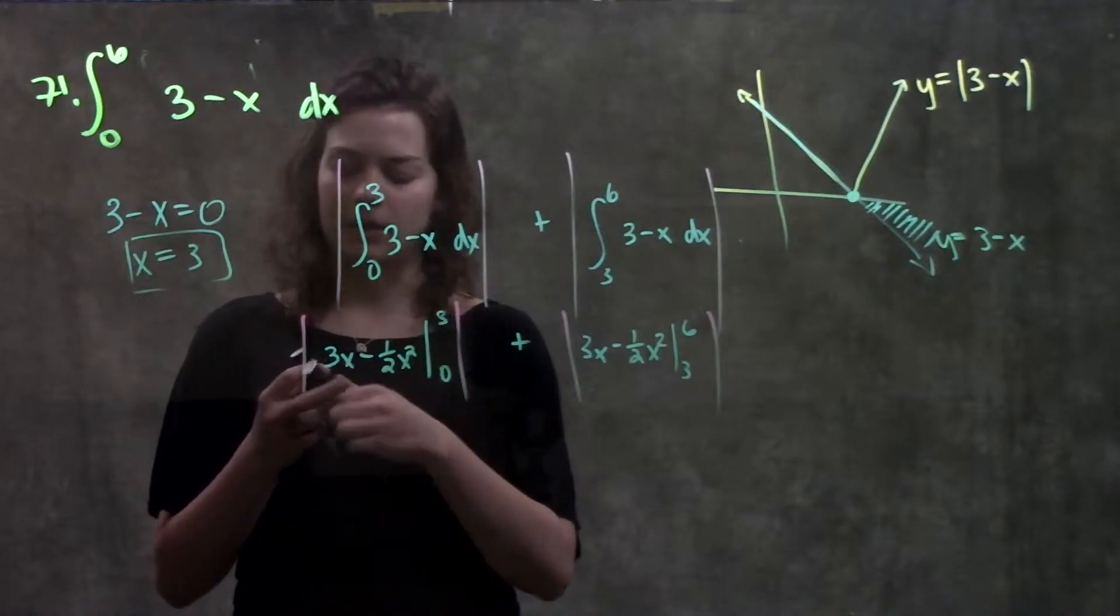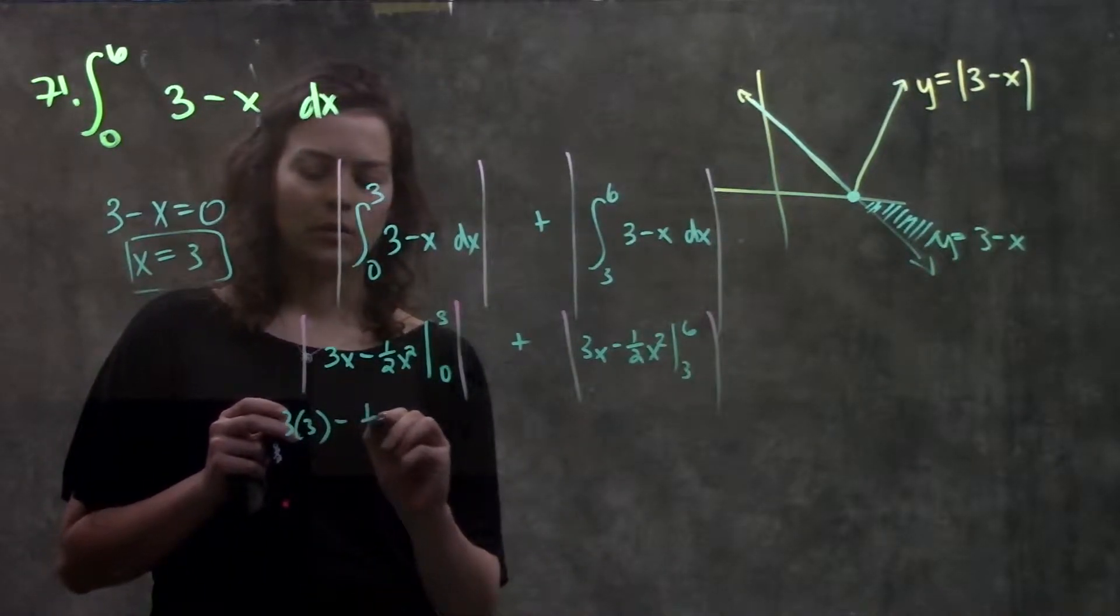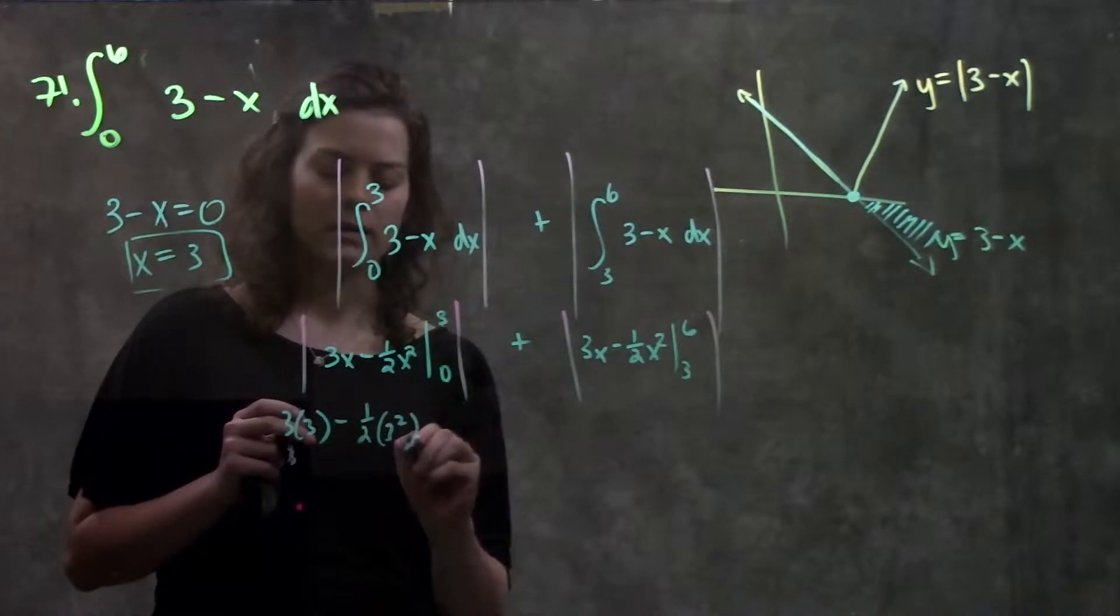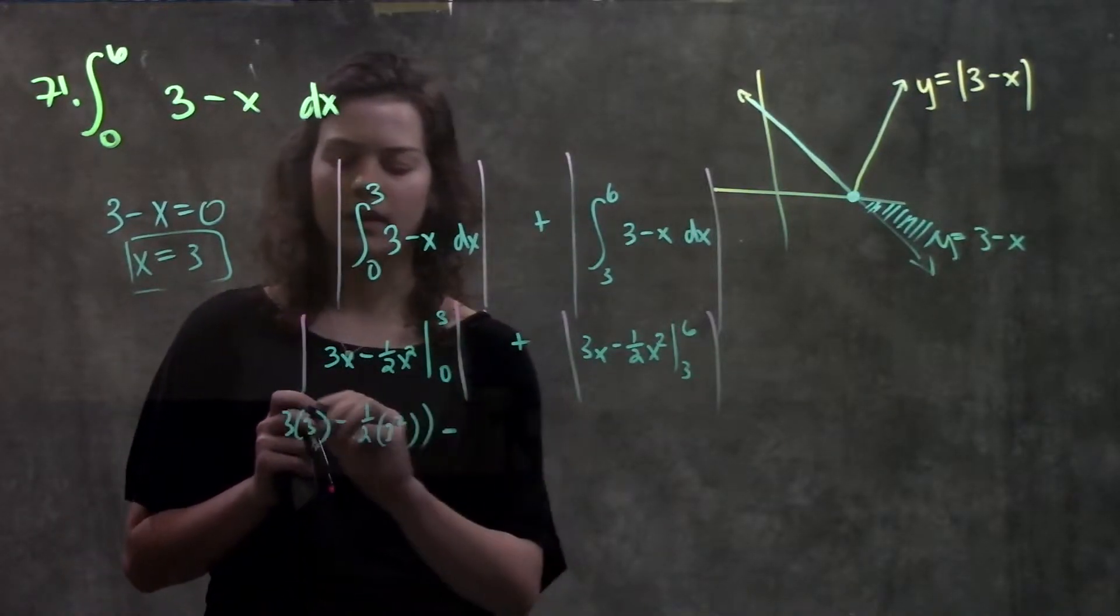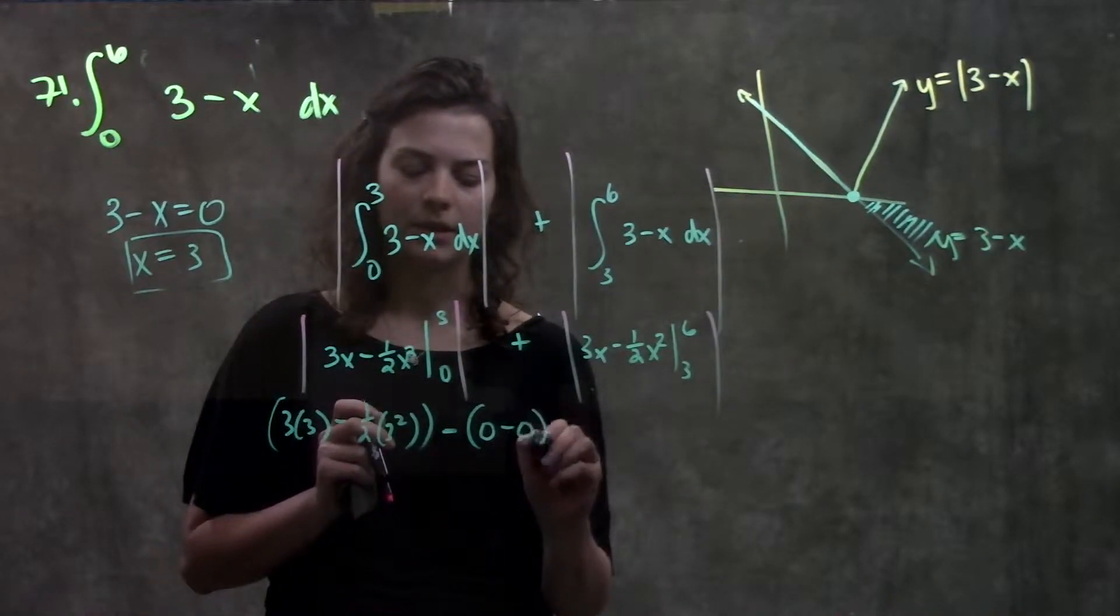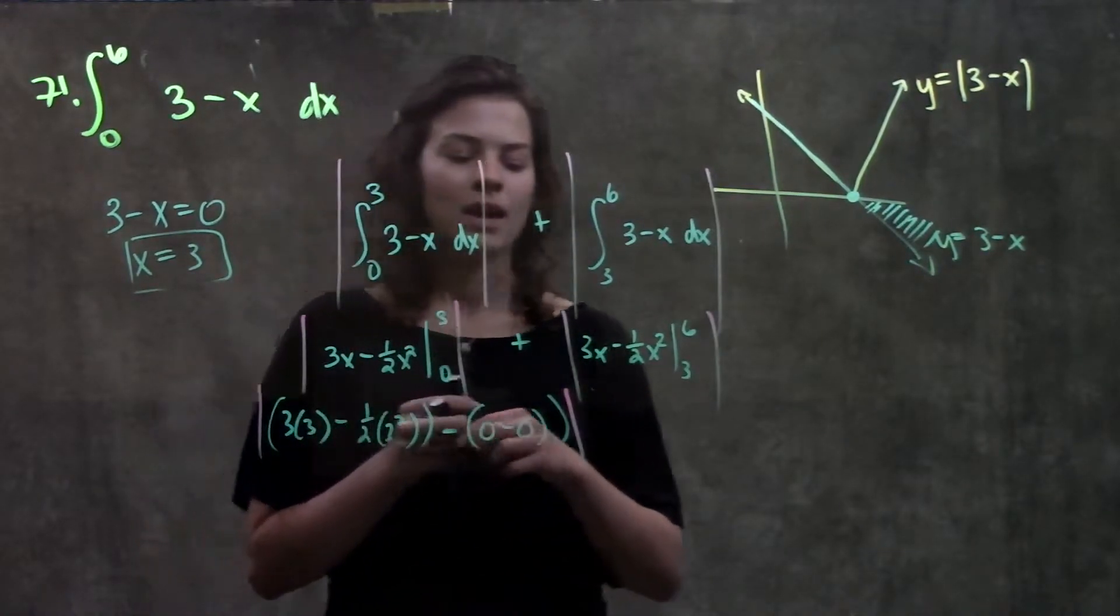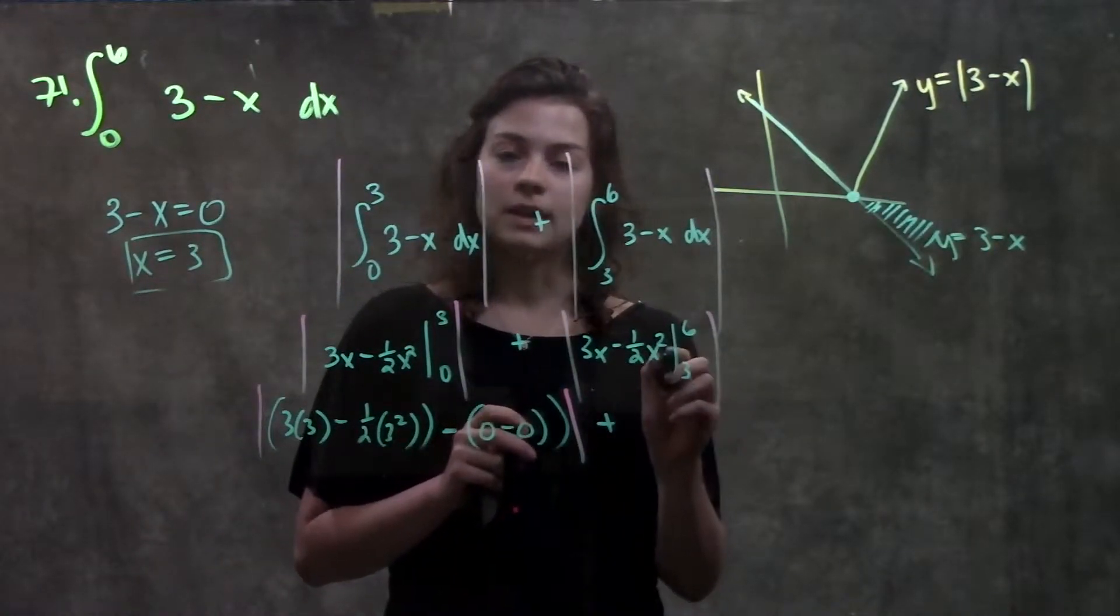Over here, I plug in my three first. I get three times three, minus one half times three squared. Now minus all of this, minus everything I get when I plug in zero, which just becomes zero minus zero. Remember, absolute values over all of this.